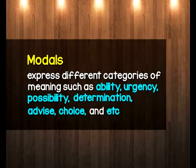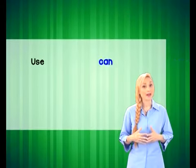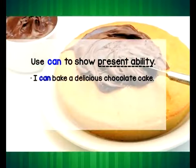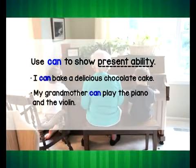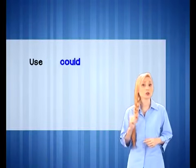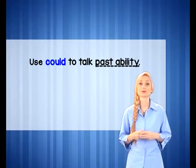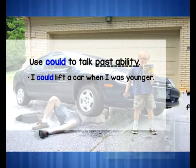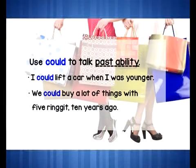Here are the modals and their categories of meaning. We use 'can' to show present ability: 'I can make a delicious chocolate cake.' 'My grandmother can play the piano and the violin.' We use 'could' to talk about past ability: 'I could lift a car when I was younger.' 'We could buy a lot of things with five ringgit ten years ago.'